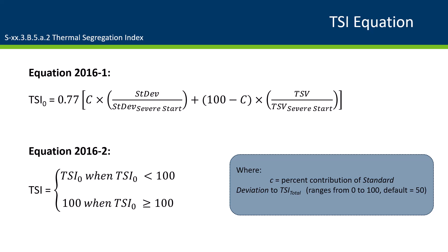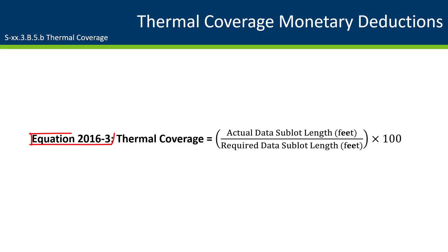The TSI is capped at 100. Please contact the AMT unit if you would like further details pertaining to the calculation of the TSI. Equation 2016-3 presents the thermal coverage equation. Thermal coverage is calculated per sublot and is based on the length of the actual PMTP data collected divided by the required length in a given sublot.